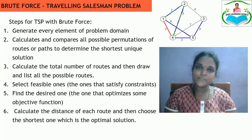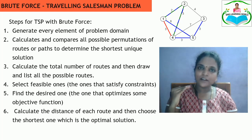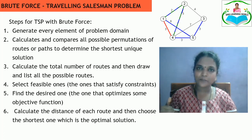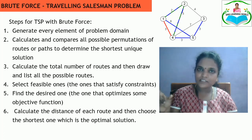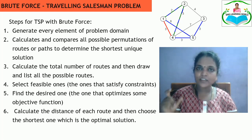The steps for finding the optimal solution using brute force are: first, find all possible permutations of paths from source to destination; second, list down all possible combinations of paths; third, find the distance for each path by summing up all edges to get the final distance; fourth, from all available distances choose the optimal one with the least distance.